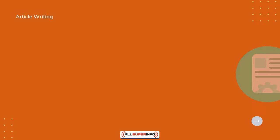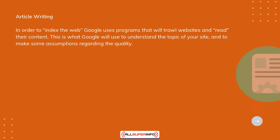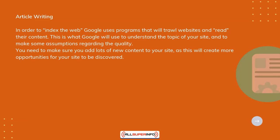Article Writing: In order to index the web, Google uses programs that will trawl websites and read their content. This is what Google will use to understand the topic of your site and to make some assumptions regarding the quality. You need to make sure you add lots of new content to your site, as this will create more opportunities for your site to be discovered.